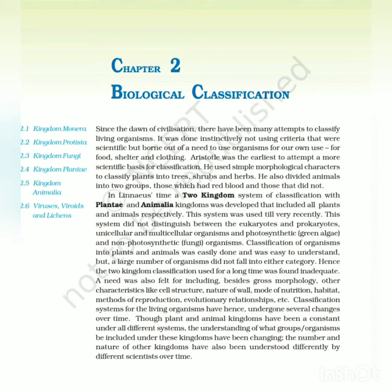In Linnaeus' time, a two-kingdom system of classification with Plantae and Animalia kingdoms was developed that included all plants and animals respectively. This system was used till very recently. However, this system did not distinguish between eukaryotes and prokaryotes, unicellular and multicellular organisms, and photosynthetic green algae and non-photosynthetic fungi. Hence the two-kingdom classification was found inadequate.